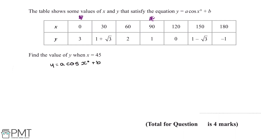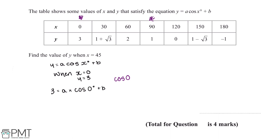We substitute both values for x and y into the equation. Starting with x equals 0 and y equals 3: 3 equals a multiplied by cos 0 plus b. For the exam you're expected to know that cos 0 equals 1, so 3 equals a multiplied by 1 plus b, which simplifies to 3 equals a plus b.